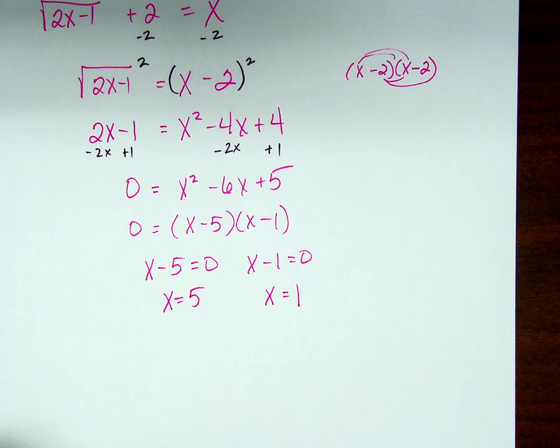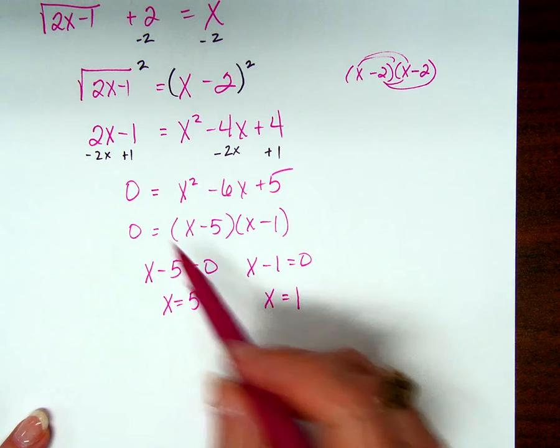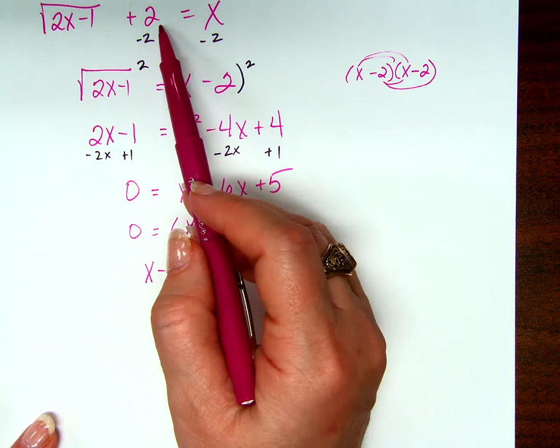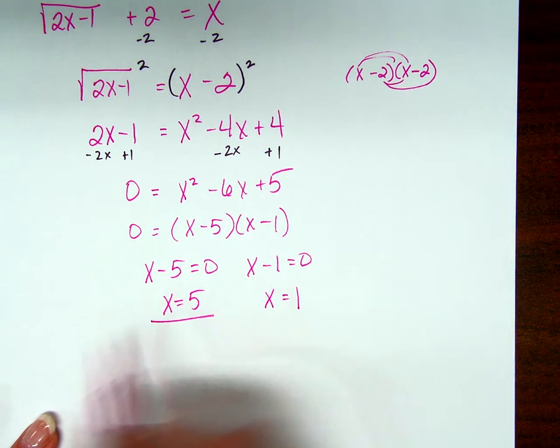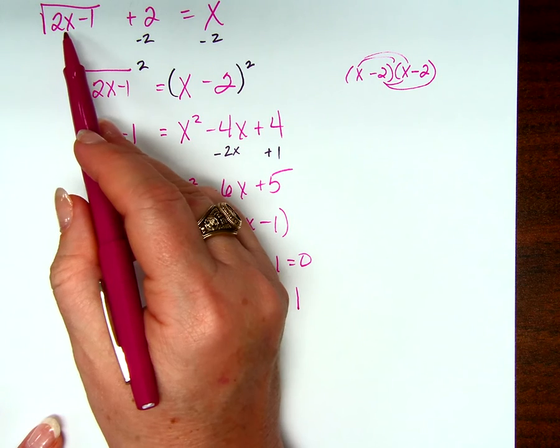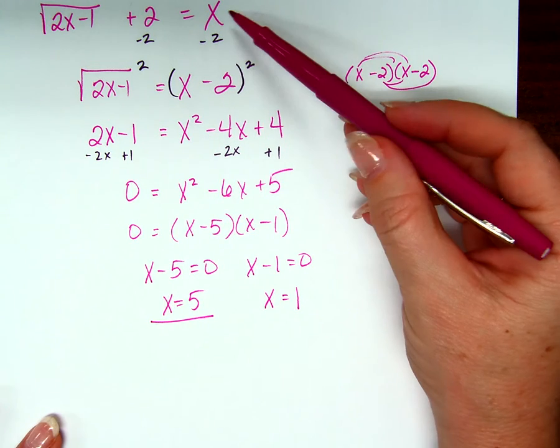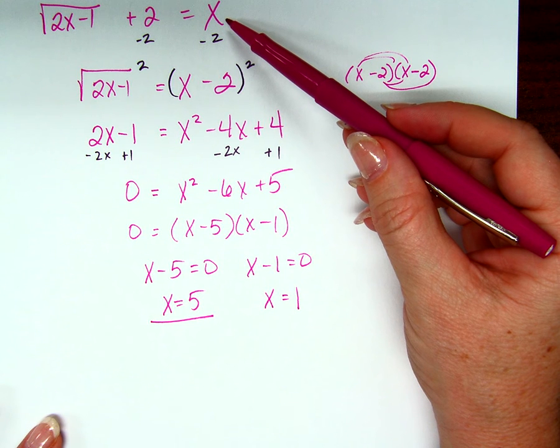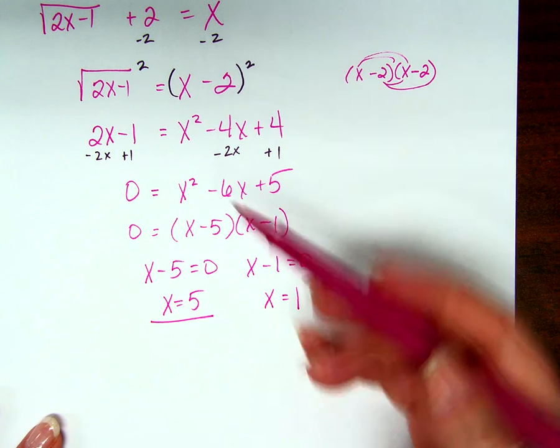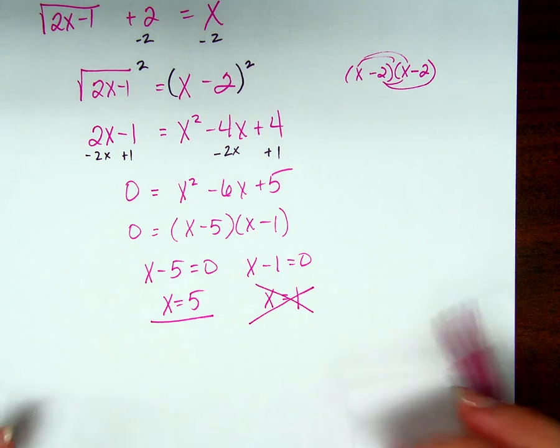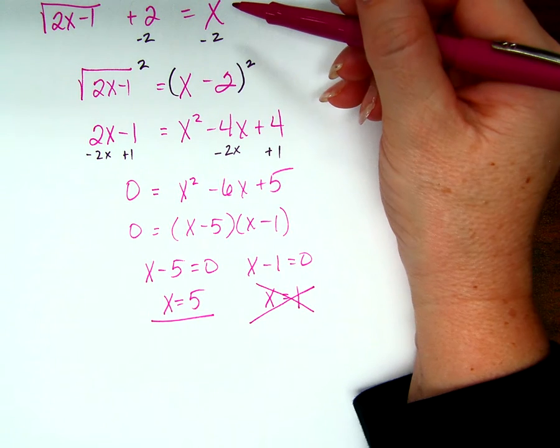Now, an interesting thing about this is that we did talk about extraneous solutions, and making sure we're checking our answers every time, right? So, if we do that, five: two times five is ten, minus one is nine, square root of nine is three, plus two is five. Two times one is two, minus one is one, square root of one is one, one plus two is one. No, it's not, is it? This is an answer that we got because it worked for the problem. It's not a solution to our original problem.